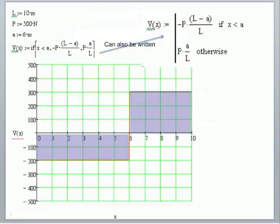Okay, so what I've done is I've defined L as being equal to 10 meters, you can of course change this at any time. P is 500 newtons, A is equal to 6 meters and I can write this function V of X with an if statement. An if statement allows us to define for X less than A a certain value, otherwise it's this value.